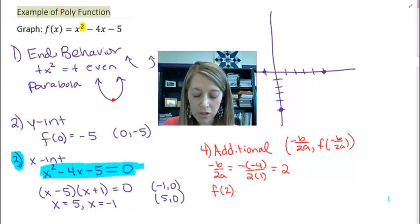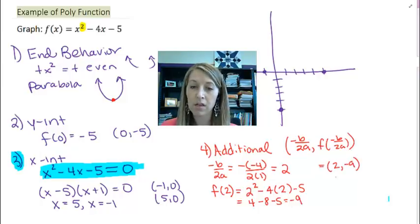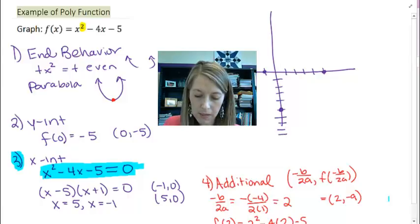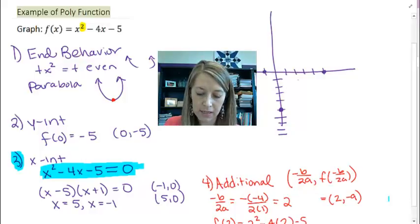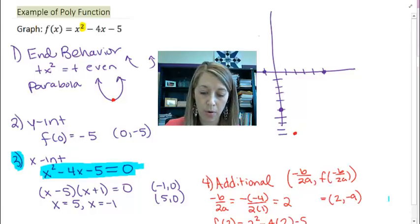Then I plug that 2 back into my original equation. So 2² - 4×2 - 5 gives me 4 - 8 - 5, or -4 - 5, which gives me -9. So that tells me my vertex is at (2, -9). There I can draw more tick marks: 1, 2, 3, 4, 5, 6, 7, 8, 9. So now my vertex is at (2, -9), and now I can hopefully get a clear picture of this symmetrical parabola.